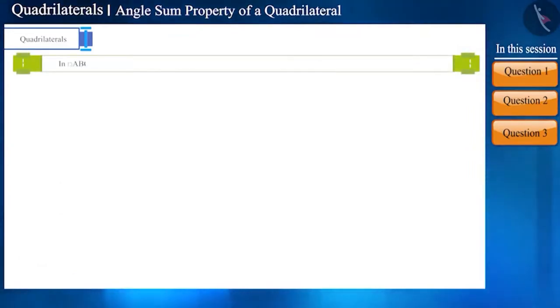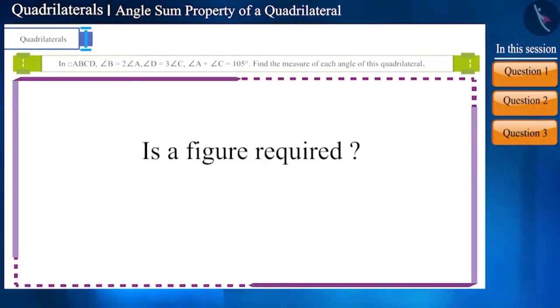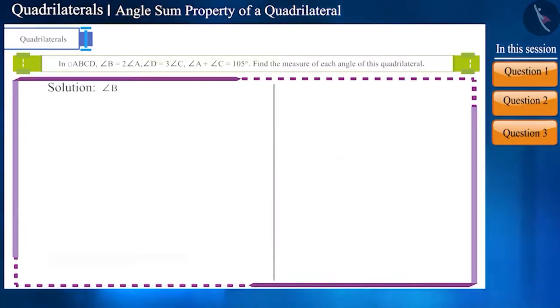In quadrilateral ABCD, the measure of angle B is 2 times the measure of angle A. And the measure of angle D is 3 times the measure of angle C. And the sum of angles A and C is 105 degrees. Then find the measure of each angle. Friends, is there a need to draw a figure here? No. We can solve this question without drawing any figure.